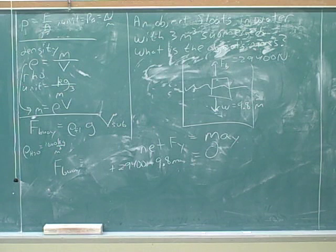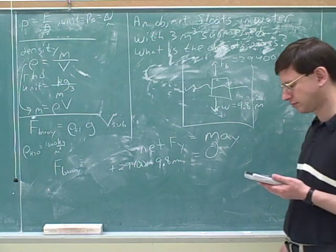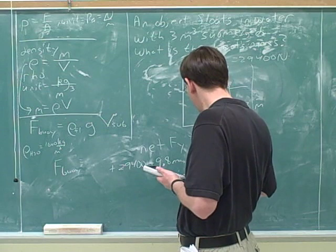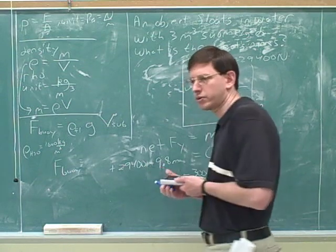Okay, now what? Now I would solve for m by dividing the buoyant force by gravity. Okay, let's do that. And it is 3,000 kilograms.